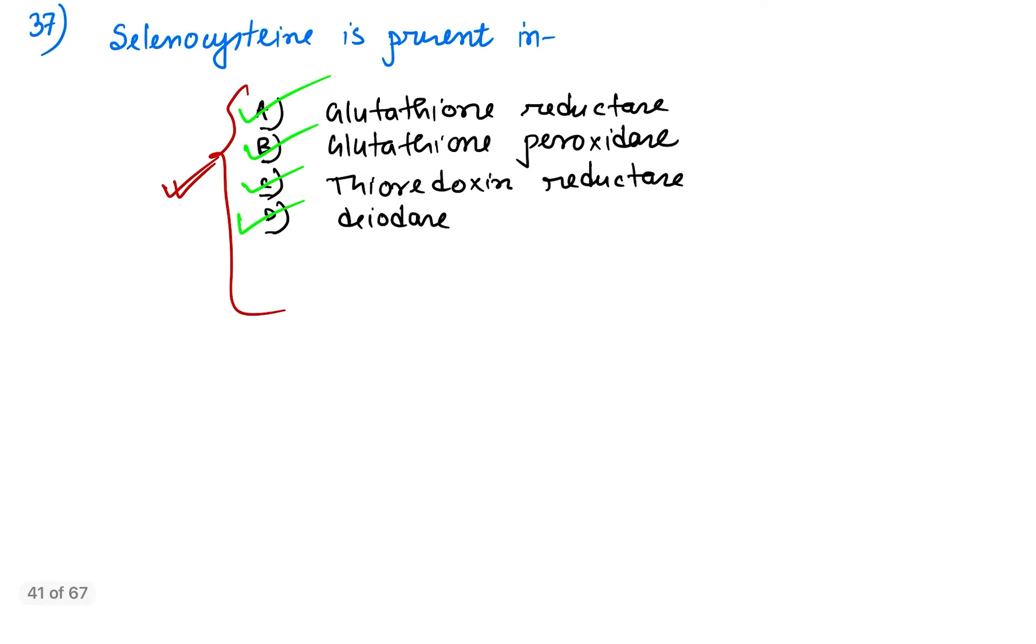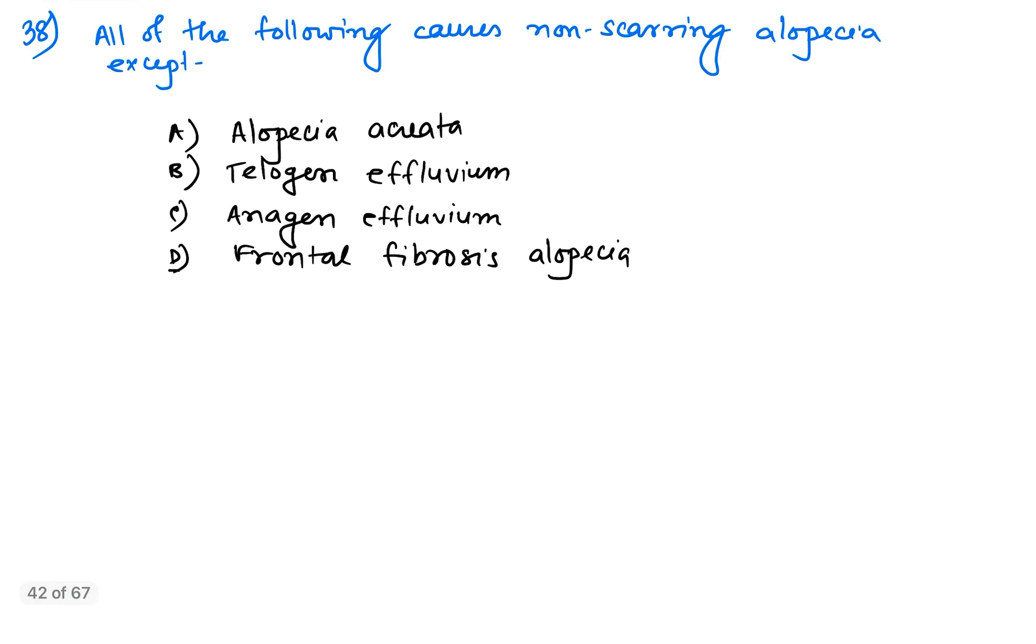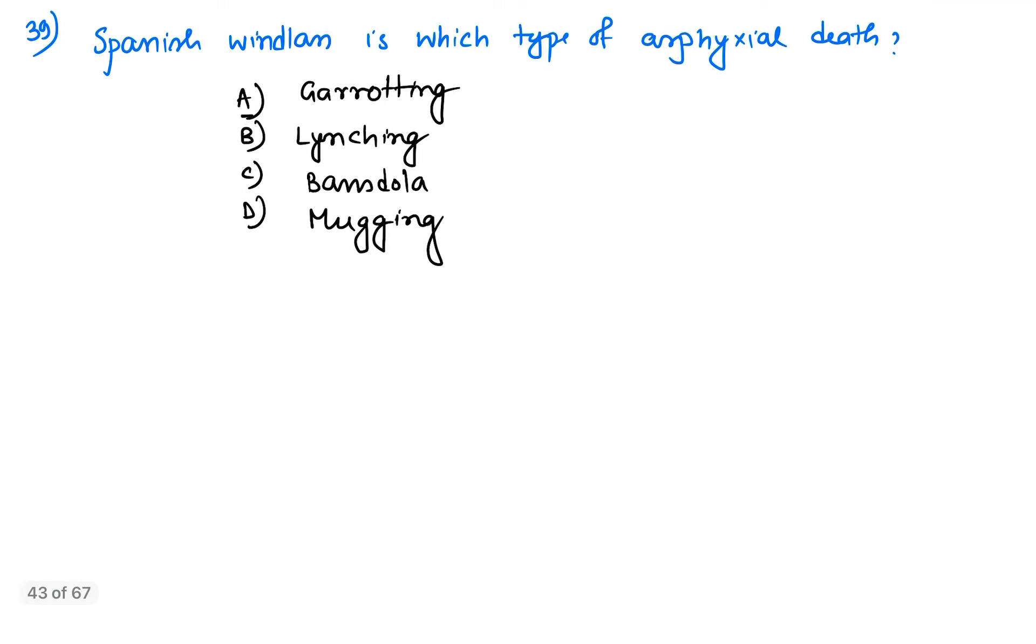Next, question number 38: all of the following cause non-scarring alopecia except? Alopecia areata - yes, it causes non-scarring alopecia. Telogen effluvium - yes, it also causes. Anagen effluvium - yes. So the answer will be frontal fibrosing alopecia. It causes fibrosis and scarring alopecia. The rest cause non-scarring alopecia.